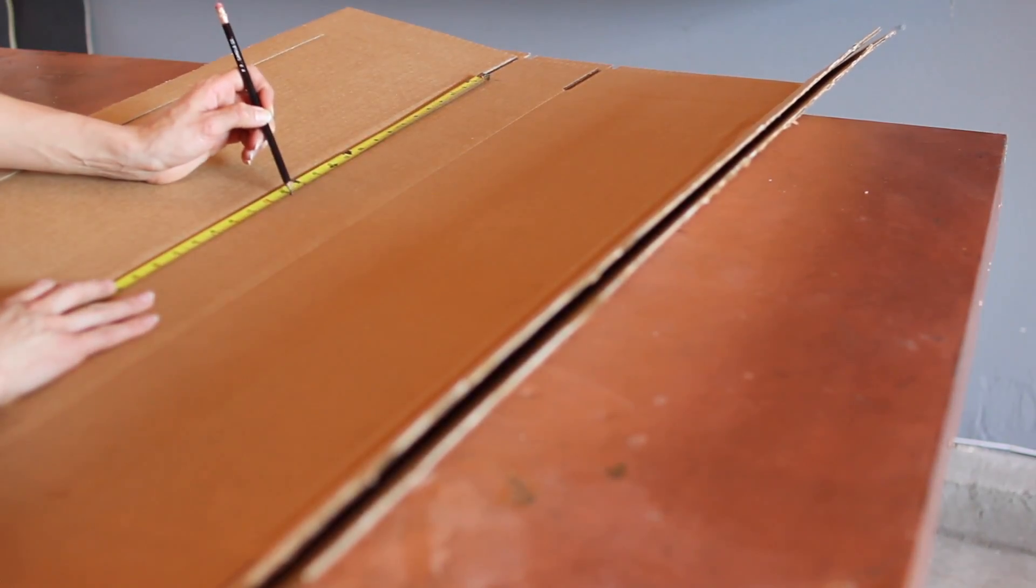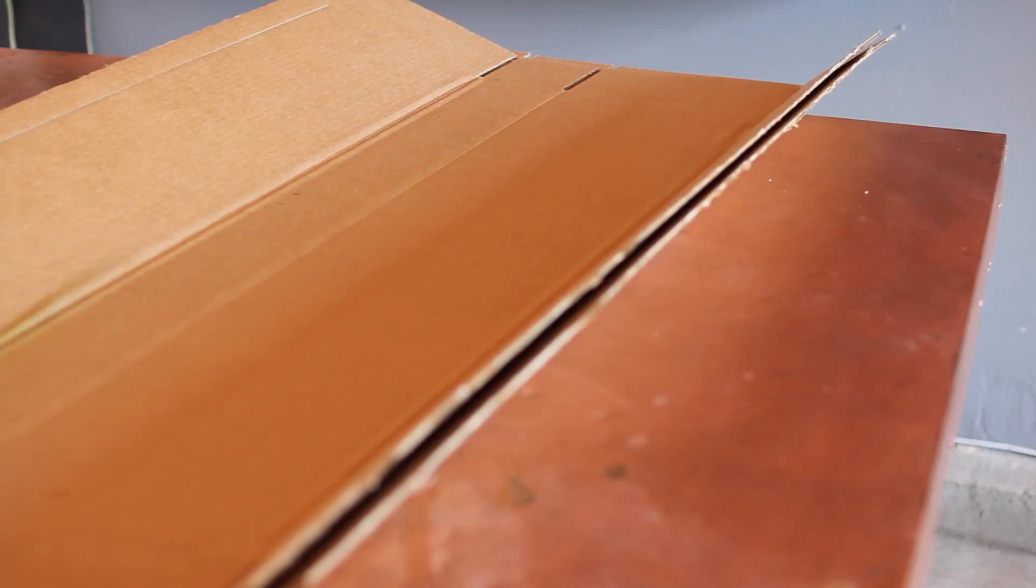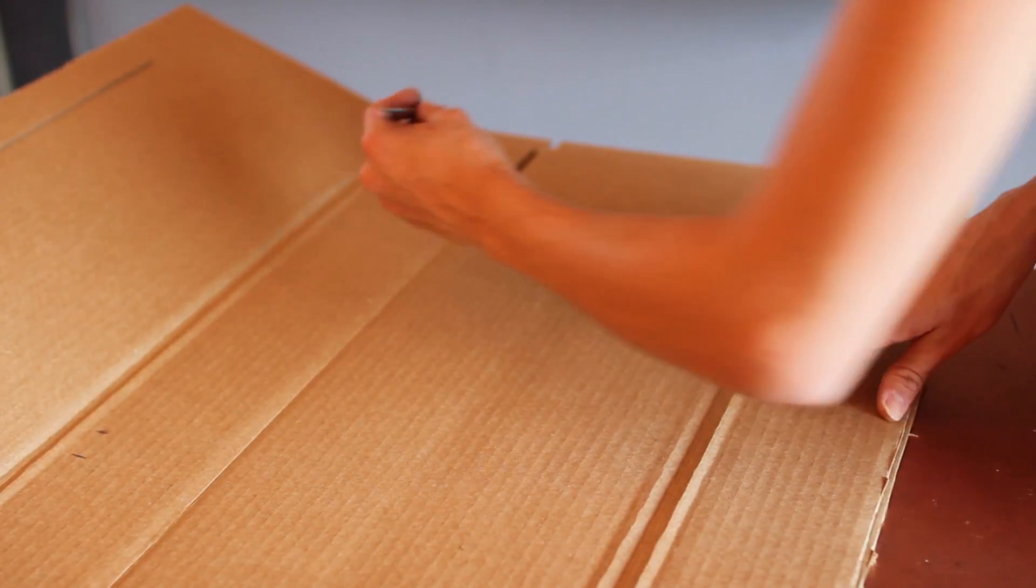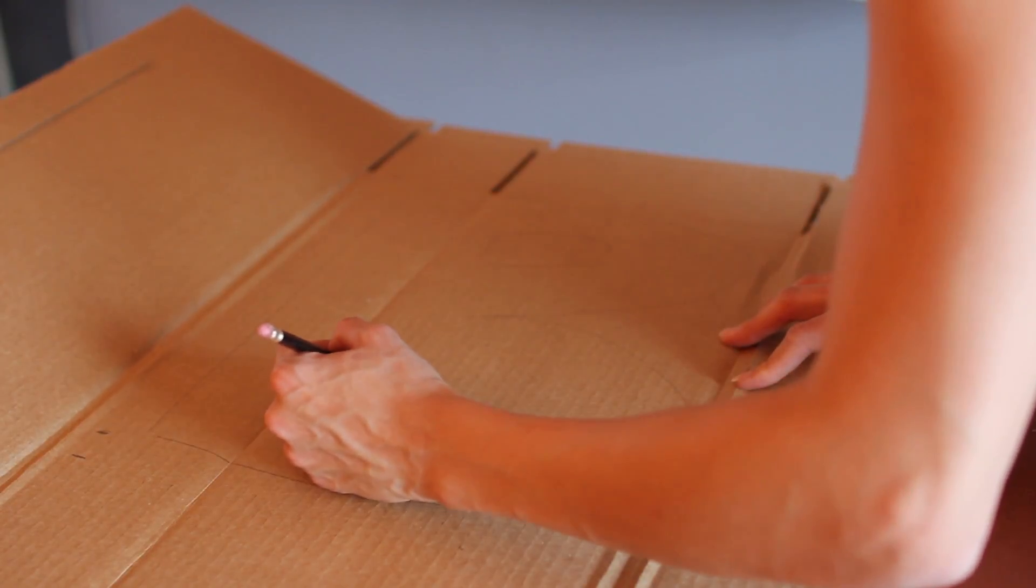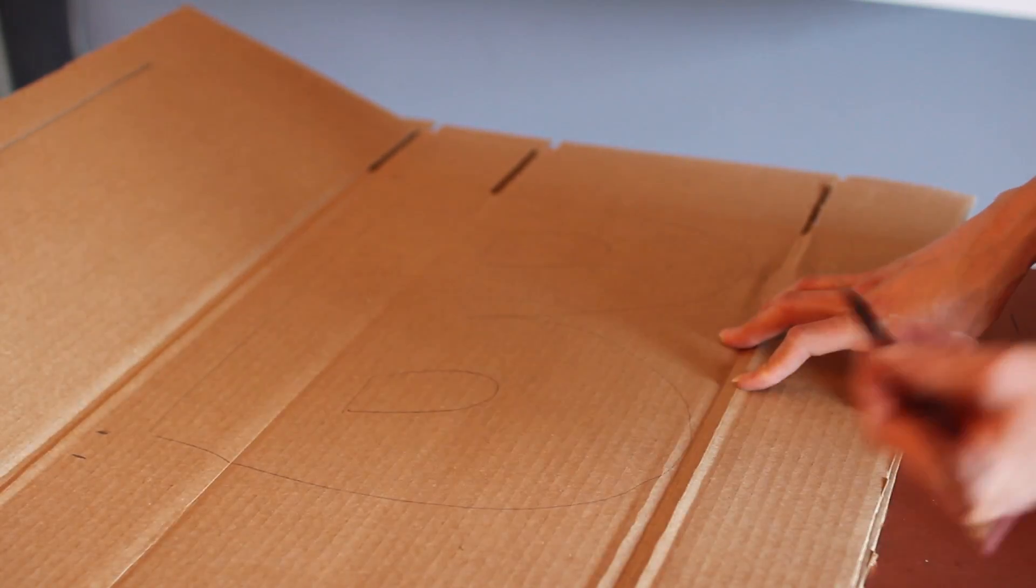I actually took a measuring tape and just measured out about 15 inches because that's how big I wanted my letters to be and then I just free handed B-O-O for boo. You can do whatever kind of word, whatever kind of design.